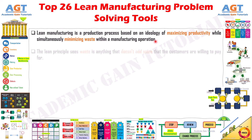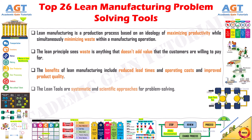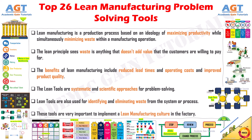The lean principle sees waste as anything that doesn't add value that customers are willing to pay for. The benefits of lean manufacturing include reduced lead times and operating costs and improved product quality. Lean tools are systematic and scientific approaches for problem-solving and are used for identifying and eliminating waste from the system or process. These tools are very important to implement a lean manufacturing culture in the factory.